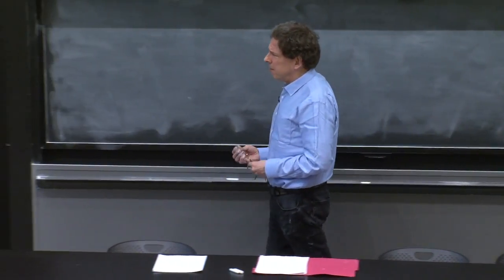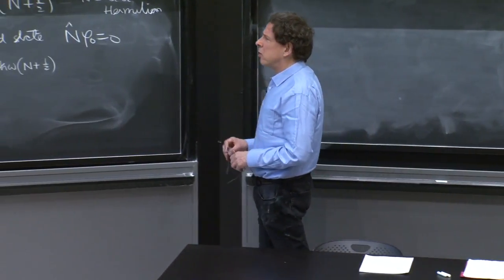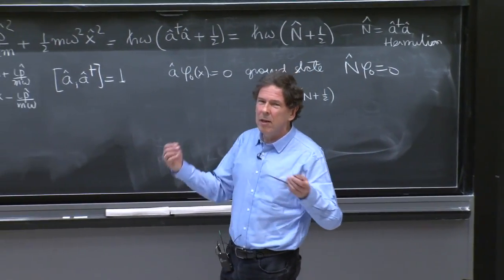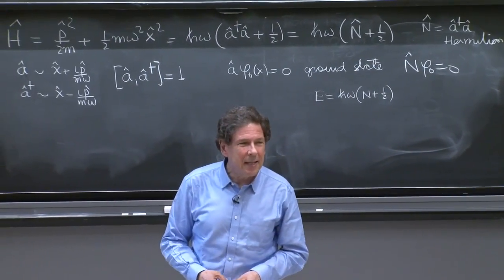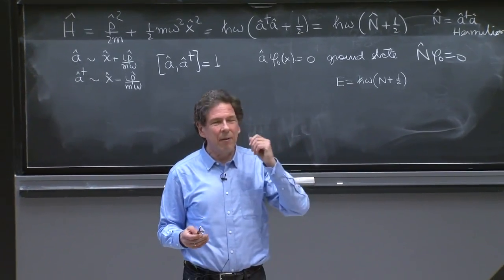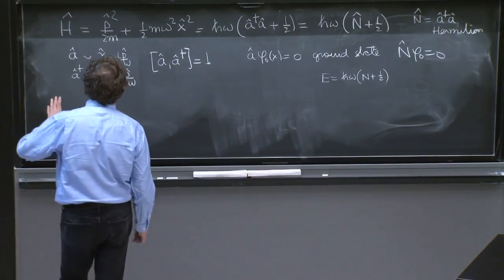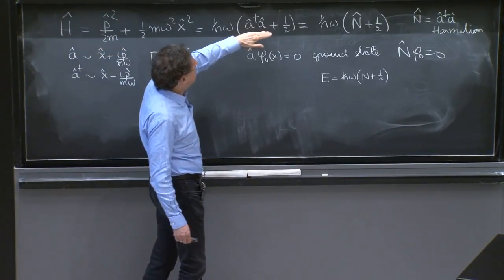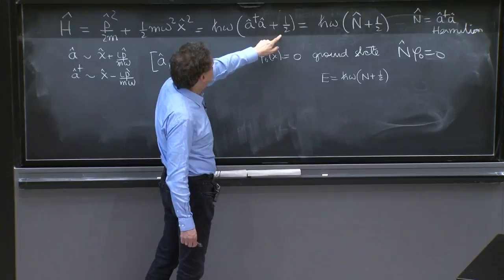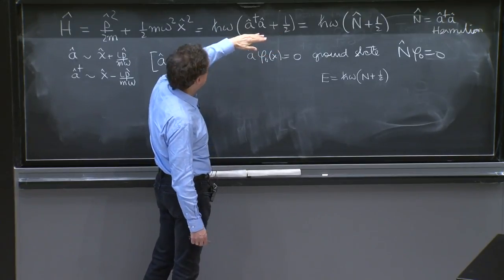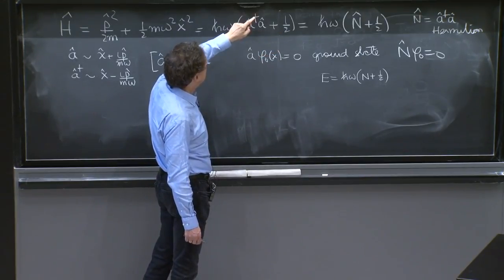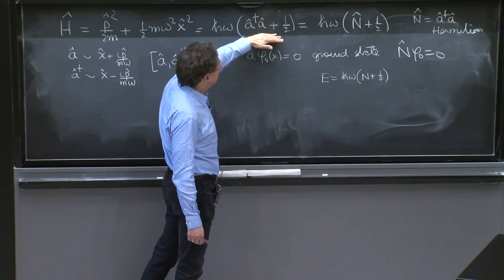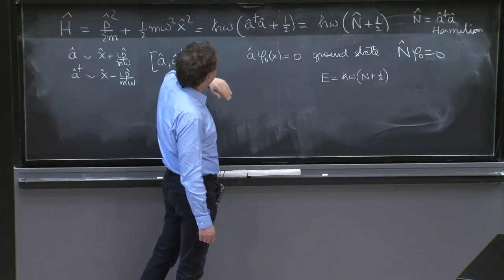Last time we solved the differential equation, we found the energy eigenstates, and then turned into an algebraic analysis in which we factorize the Hamiltonian, which meant essentially you could write the Hamiltonian up to an overall constant, that doesn't complicate matters, as the product of a dagger a. And that was very useful to show, for example,